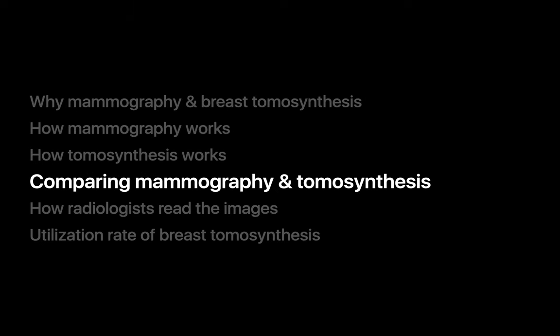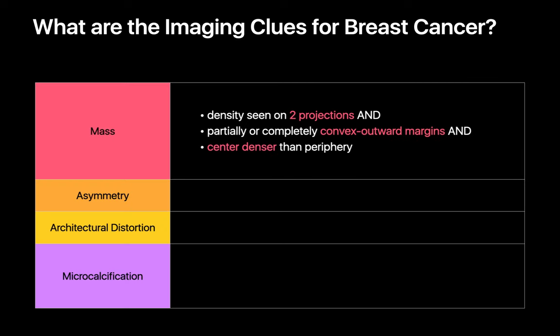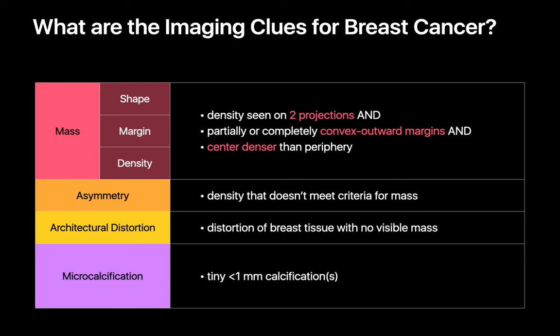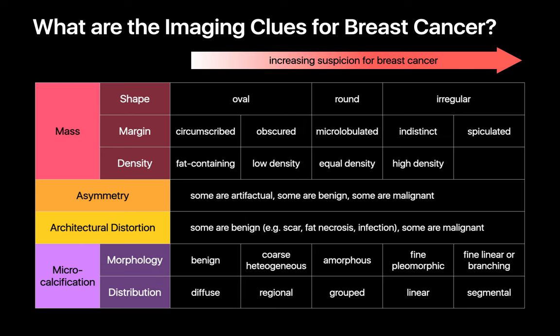So how do 2D mammography and tomosynthesis compare diagnostically? There are many different imaging features that radiologists look for when trying to detect a breast cancer. They may look for a mass — strictly defined as a density visible on two different projections that exhibits convex outward margins and is denser in its center than its periphery. When inspecting a mass, the radiologist will pay particular attention to its shape, margin, and density. A radiologist also carefully inspects for any asymmetries — basically a density in the breast that doesn't quite meet the criteria for a mass — as well as suspicious architectural distortion of breast tissue and suspicious tiny microcalcifications, paying special attention to their morphology and distribution. These factors in aggregate influence a radiologist's suspicion for breast cancer.